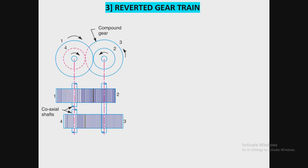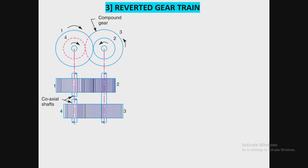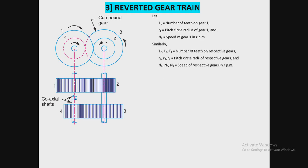After the compound gear train, the next type is the reverted gear train. A reverted gear train is used when the transmission of power is from one shaft to another shaft, but the shafts are coaxial. In previous cases the driving and driven shafts were parallel to each other, but in this case the driver and driven shafts are coaxial to each other.